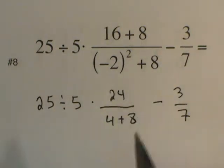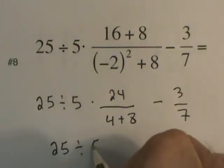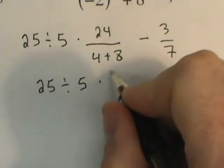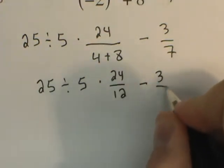I'll continue to simplify this fraction. So on the next line, I'm going to call it 25 divided by 5 times 24 over 12 minus 3 sevenths.